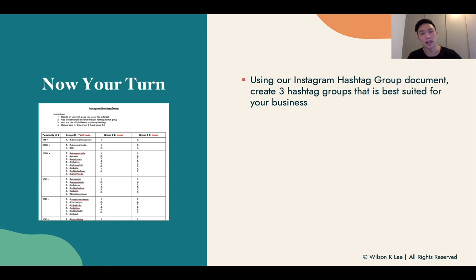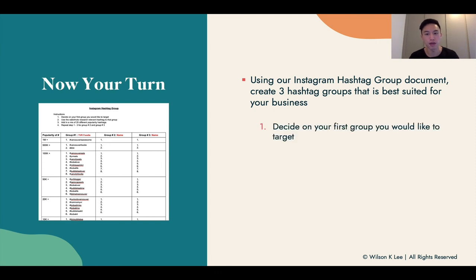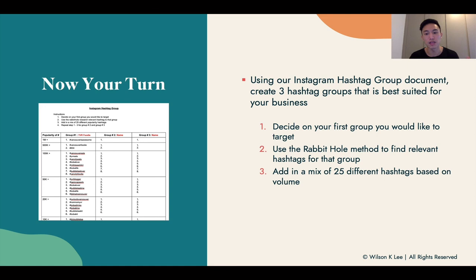Now it is your turn. Use the Instagram hashtag group document in the resources link below and create three hashtag groups best suited for your business based on different feelings — for example, our first group is YVR foodies, second could be about our bubble tea kit, and third could be about our marketing campaigns. First, decide the group you want to target. Second, use the rabbit hole method to find all relevant keywords specifically for that group. Then add a mix of 25 different hashtags based on volume, and repeat steps one to three for groups two and three.